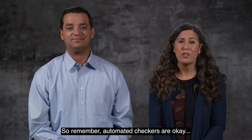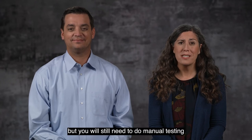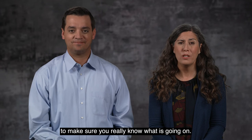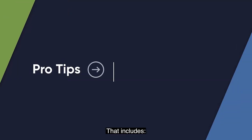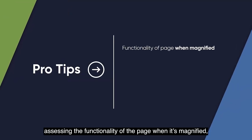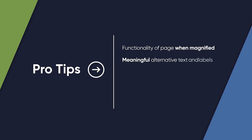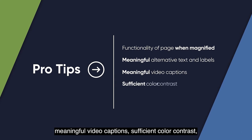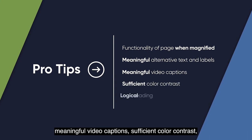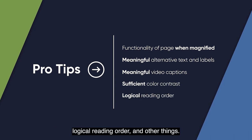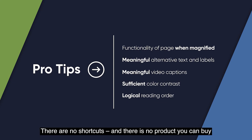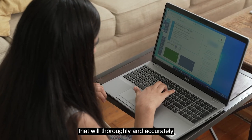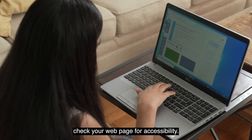So remember, automated checkers are okay, but you will still need to do manual testing to make sure you really know what is going on. That includes assessing the functionality of the page when it's magnified, checking for meaningful alternative text and labels, meaningful video captions, sufficient color contrast, logical reading order, and other things. There are no shortcuts, and there is no product you can buy that will thoroughly and accurately check your webpage for accessibility.